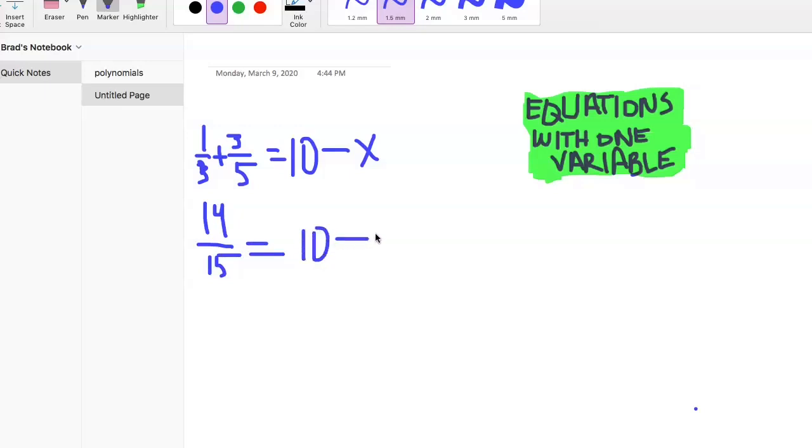Now we'd like to get rid of this 10, so we'll subtract 10 from both sides. We can get that x by itself which is what we really always want. I always like to have the x on the left side. So 14-fifteenths minus 10, if it was 1 minus 10 you would know it was negative 9, right? So this one is actually negative 9 and then there's 1-fifteenth left over, negative 9 and 1-fifteenths.